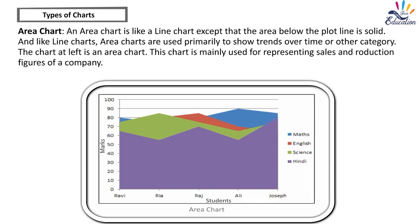Area chart: An area chart is like a line chart except that the area below the plotline is solid. Like line charts, area charts are used primarily to show trends over time or other category. This chart is mainly used for representing sales and production figures of a company.